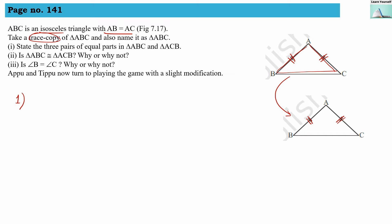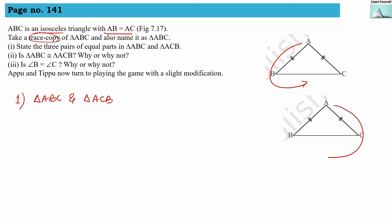The first question is: state the three pairs of equal parts in triangle ABC and triangle ACB. So our first triangle is ABC and the second triangle is ACB. We have to write three equal parts. The first pair: AB is equal to AC, as already given in the question.